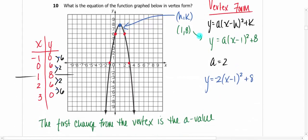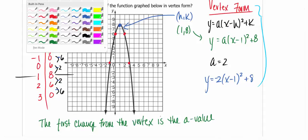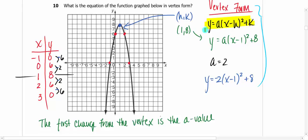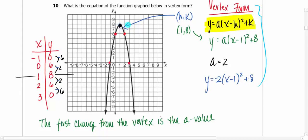Here's one about a graphed function in vertex form — it wants you to write the equation. Vertex form for a quadratic is y = a(x − h)² + k. Identify your vertex, which is (1, 8). Remember, the h part has a negative sign, so whatever it looks like, it goes opposite inside with the x. Plug in the 8 for k — that should not look opposite because it has a positive there.